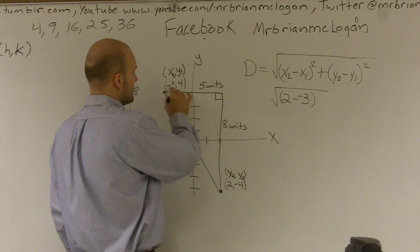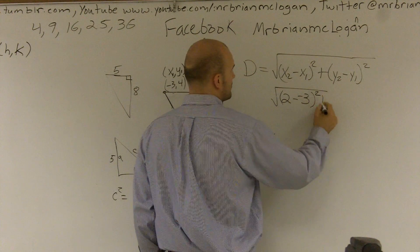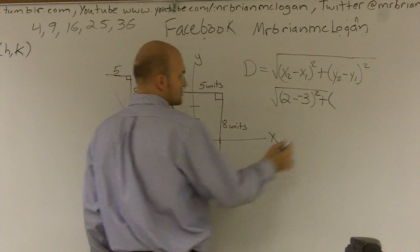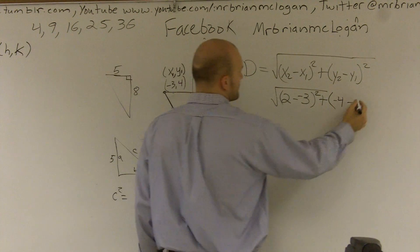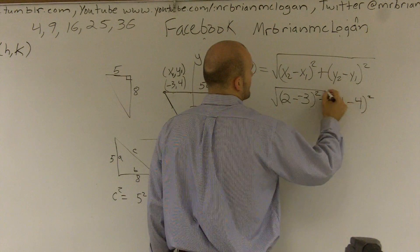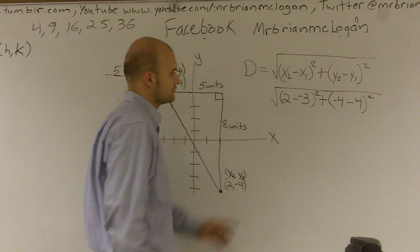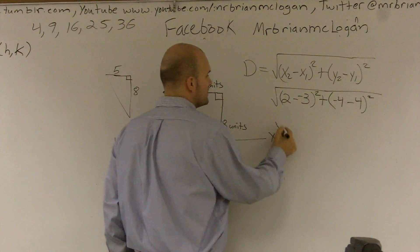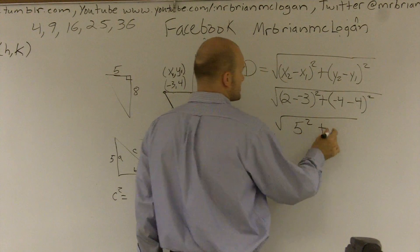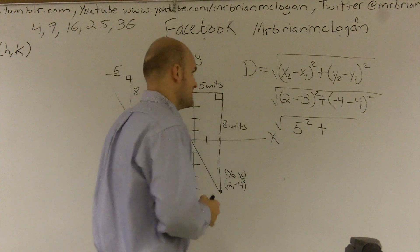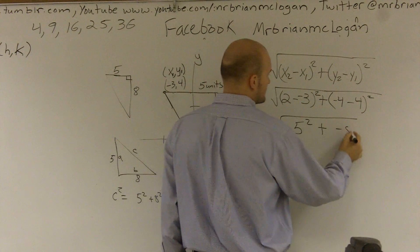So 2 minus a negative 3 squared plus y2, which is negative 4, minus y1, which is 4. Okay. 2 minus a negative 3 gives you 5, plus negative 4 minus 8 is going to give you a negative 8 squared.